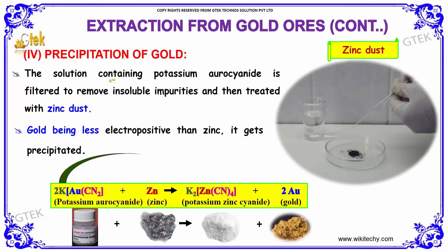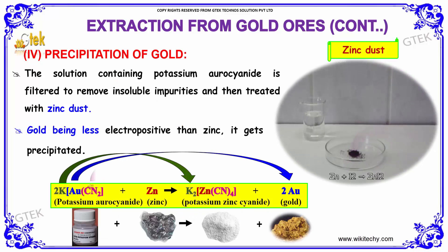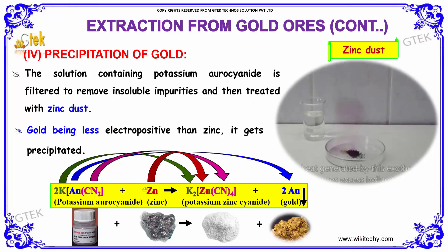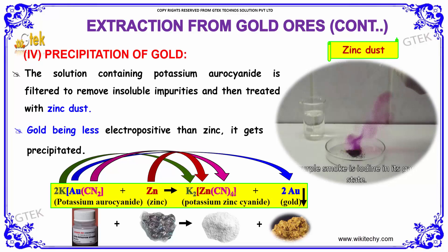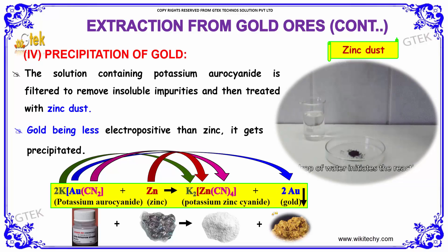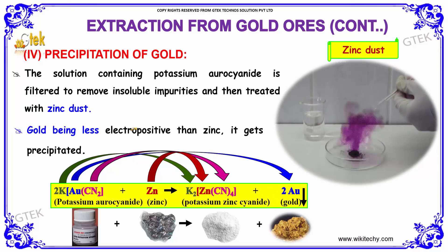Precipitation of gold. The solution containing potassium aurocyanide is filtered to remove insoluble impurities and then treated with zinc to form potassium zinc cyanide. You are able to see the gold is precipitated here. Gold, being less electropositive than zinc, gets precipitated out.